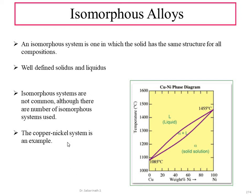A typical isomorphous alloy example is the copper-nickel alloy. On the left side the percentage of copper is 100 and nickel is 0, while on the right side copper is 0 and nickel is 100. So this x-axis represents an increasing order of nickel weight percentage.